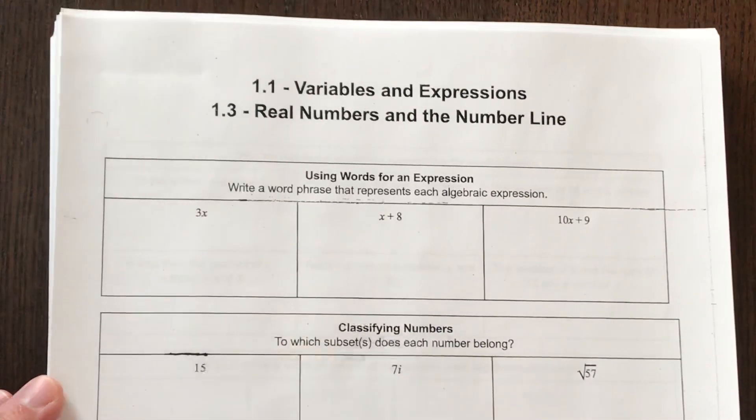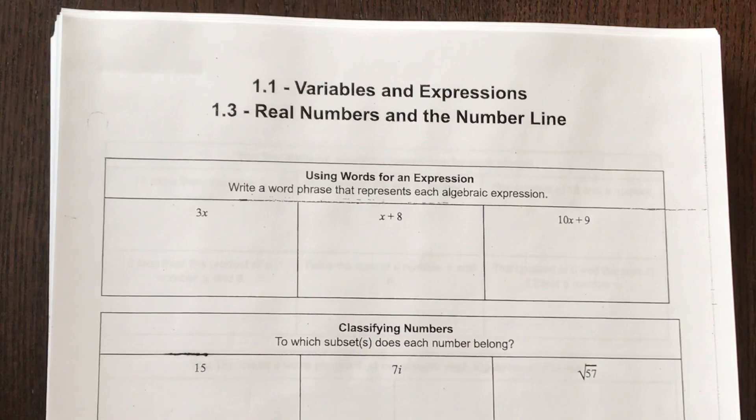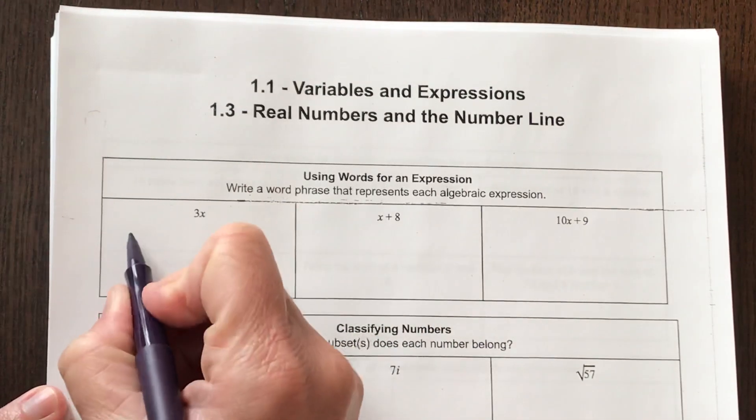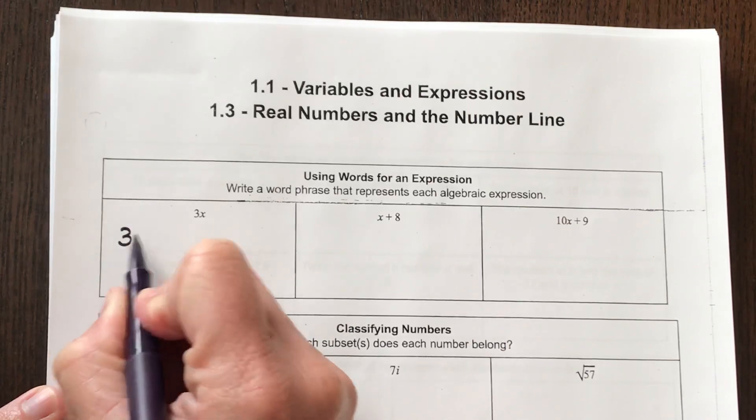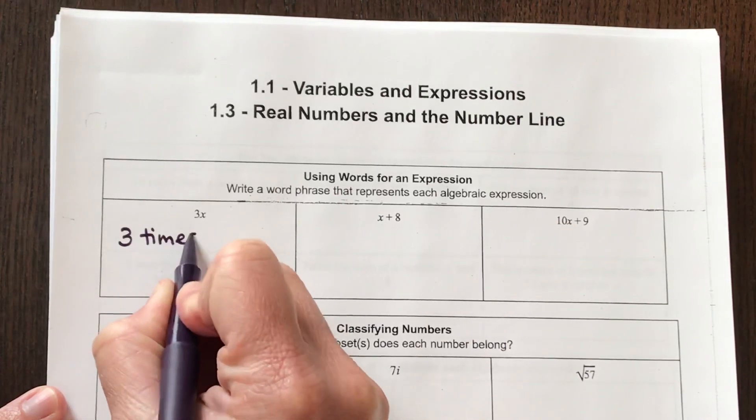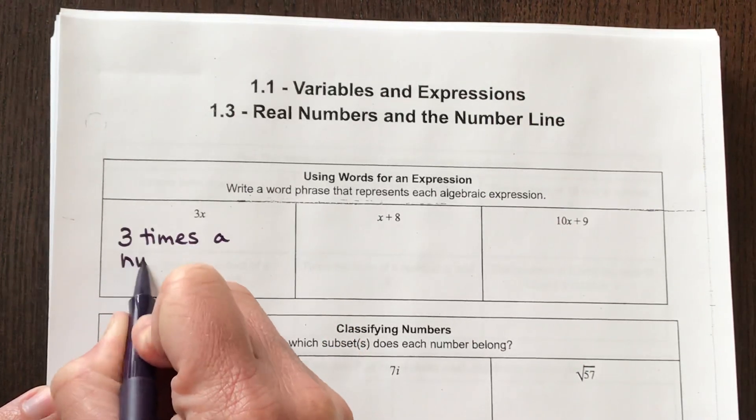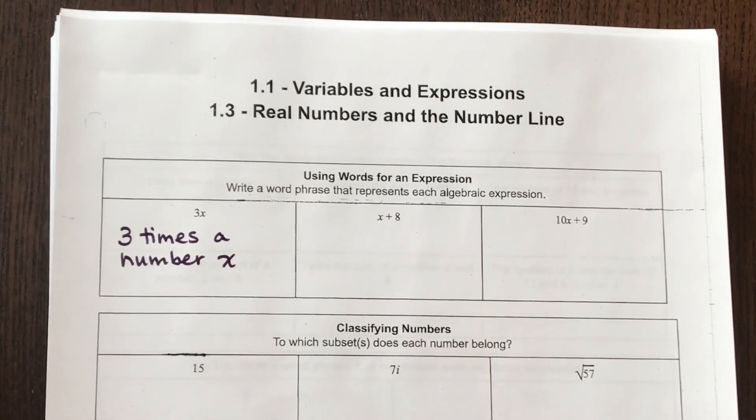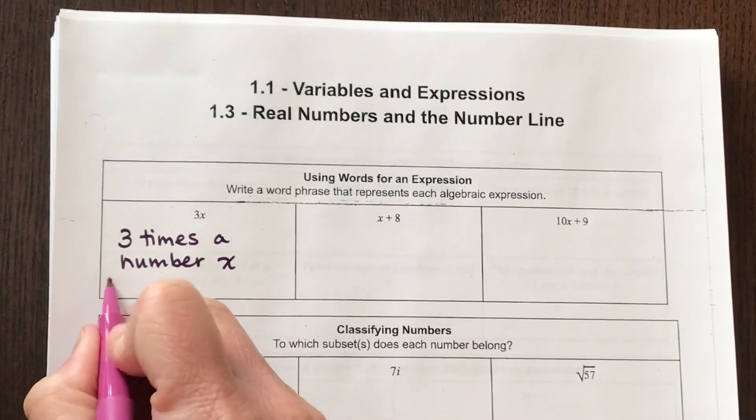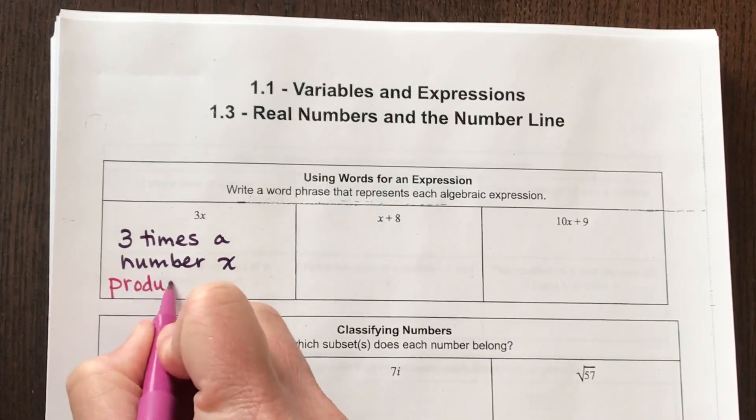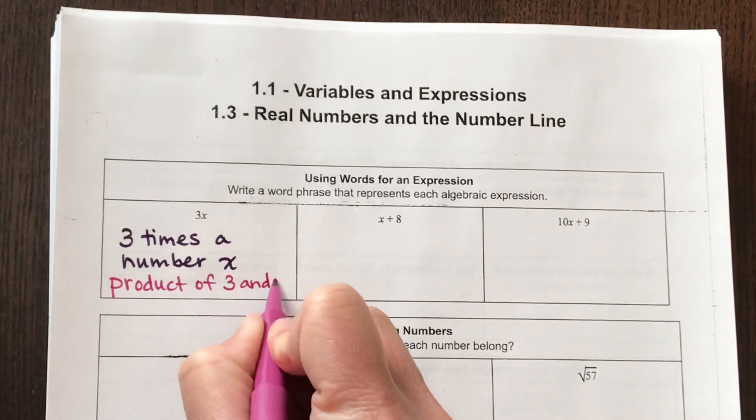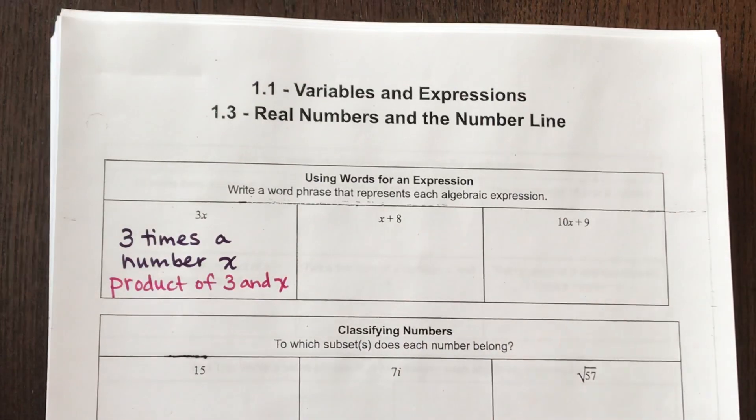So this would be an example here for 3x. If I have 3x, that would be a sentence like this: I have 3 times a number x. You could also say, this would be another correct way of answering the problem, the product of 3 and x. That would be another example.